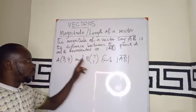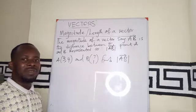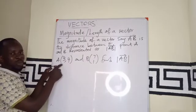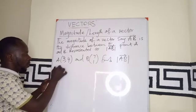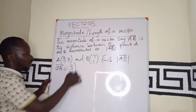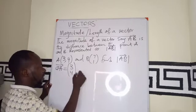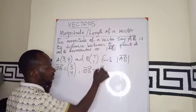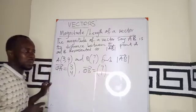If we have a question like this, we have the point A and the point B. We are asked to find the vector AB. So, what we do is that we will write this as the position vector of OA equals to 3, 4. We write the position vector of this as OB 7, 1.